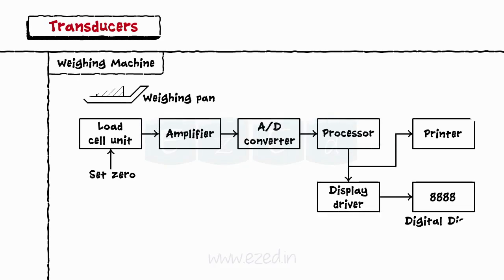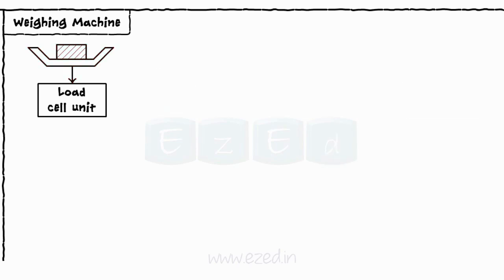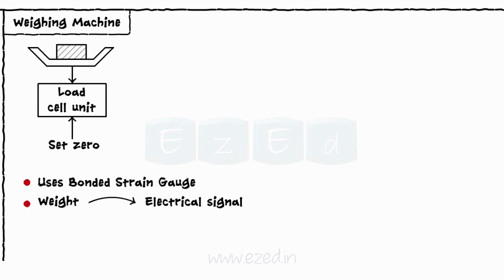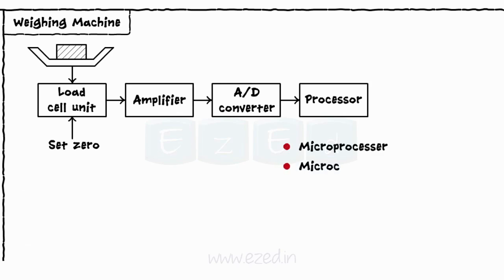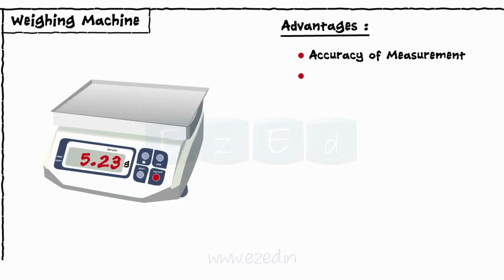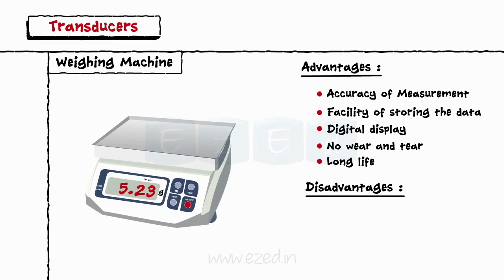Next, we will study about weighing machines. The different blocks of a weighing machine are: load cell unit, amplifier, analog to digital converter, processor, display driver, display and printer. The weighing pan is directly connected to the load cell unit. The load cell unit has bonded strain gauges which convert the weight into electrical output. Zero setting adjustment is also provided with the load cell unit. The electrical output of the load cell unit is amplified by an amplifier and converted into a digital signal by an A to D converter. The processor can be a microprocessor or microcontroller — its main function is to process input data, store it in memory, and perform computational operations. The advantages of weighing machines are accuracy of measurement, facility of storing data, digital display, no wear and tear, and long life. The only disadvantage is the requirement of high initial cost.